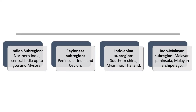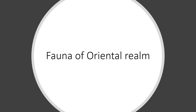The third sub-region is known as the Indochina Sub-region, which includes the southern portion of China, Myanmar, and Thailand. The last sub-region is the Indo-Malayan Sub-region, which includes most of the Malayan Peninsula — that is the Malayan mainland and the group of islands around Malaysia known as the Malayan Archipelago.